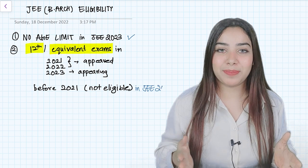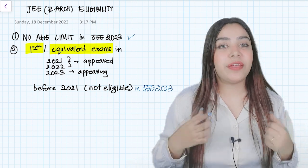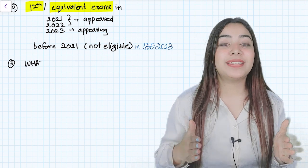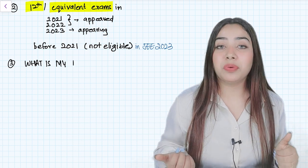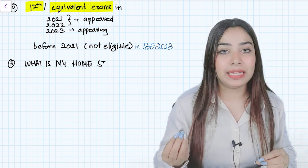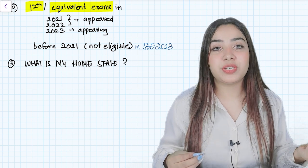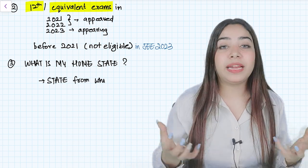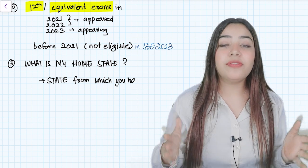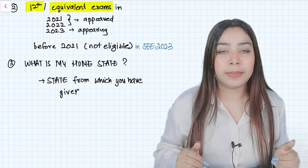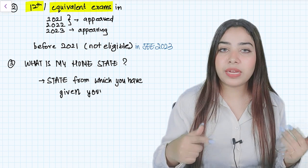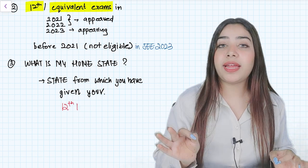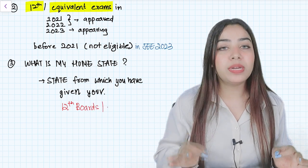The next point in which everybody is having a lot of confusion is: what is your home state? Home state plays a very huge role in getting into a few colleges. For example, if you are getting into a particular NIT, there you will have a few reservations if you are from a particular home state, the state in which that particular NIT is. So home state plays a very important part in the reservation terms. Many people have confusion about what is your home state exactly—the state where you are born, where your birth certificate is. Basically the home state which is considered in JEE B.Arch examination is the state from which you have given your 12th board examination or any other equivalent examination.